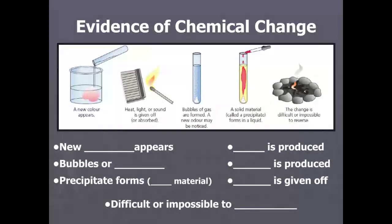Here's some evidence of a chemical change. First, a new color appears — if you add two clear liquids together and something pink, red, or purple appears, that's evidence of a chemical change. If you mix things together without boiling and bubbles or fizzing happen, that is a chemical change. If a precipitate forms — a solid that sinks to the bottom — that's good evidence. If two things are mixed without adding heat and heat is produced, definitely a chemical change. If light is produced, like fire, or sound is given off like an explosion — definitely chemical. And what they all have in common is they are difficult or impossible to reverse.